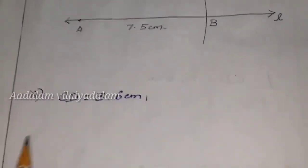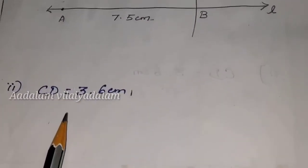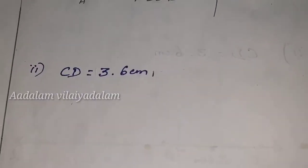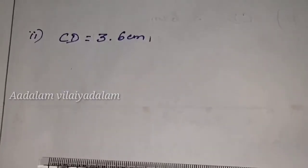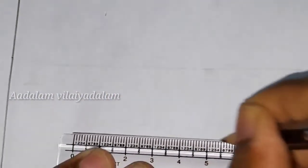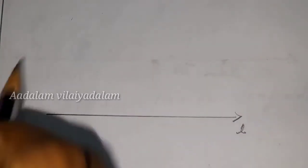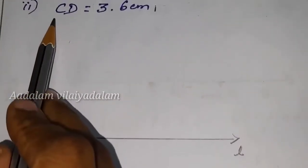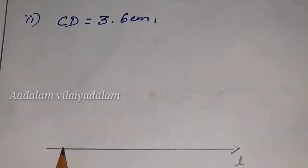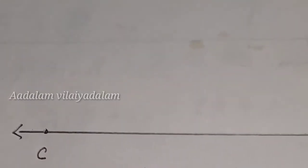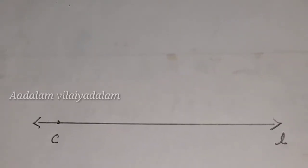Second question: CD equal to 3.6 cm. Here also the same method. First draw the line L. The first point is C, so mark the point C here.